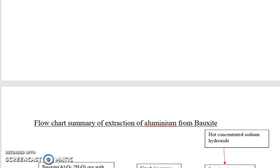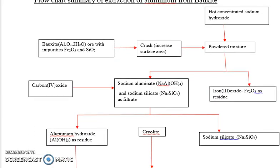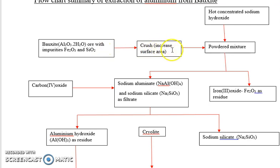This is a flowchart of the extraction of aluminium from bauxite. Starting from the beginning: bauxite ore, with impurities of iron(III) oxide and silica, is crushed to increase the surface area. The powdered mixture is then mixed with concentrated sodium hydroxide.